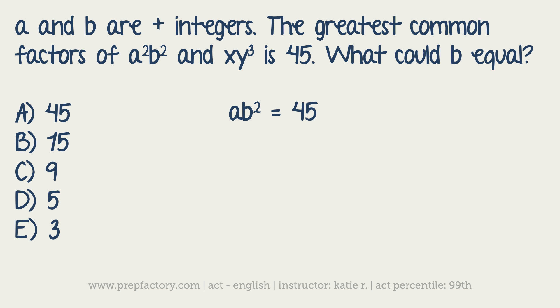It said what could b equal, which means there are multiple choices that would work for b. They won't have given you more than one in the answer choices themselves, but you could come up with many different answers. Luckily, at least it says it's a positive integer, so you're not dealing with fractions. But there could be multiple answers for this problem.